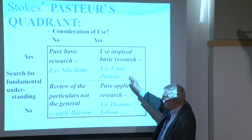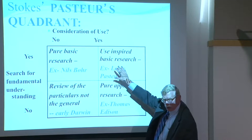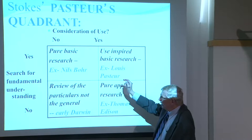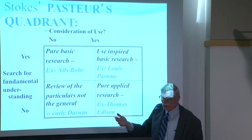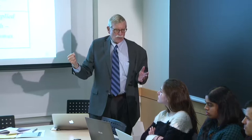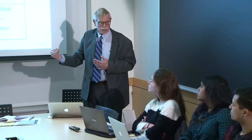Then there's what Stokes calls Pasteur's Quadrant — the one that Vannevar Bush's model misses completely. He's trying to organize as though it's all particle physics, but a lot of stuff isn't. Louis Pasteur is searching for fundamental understanding — doing microbiology at a really fundamental scale — but he's certainly considering use. He doesn't want kids to die of bad milk in Paris; he's after a medical fix. That's a very good example of basic research being driven by consideration of use.